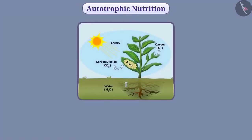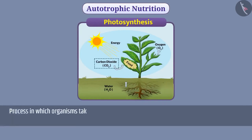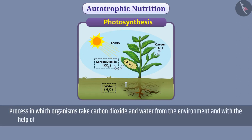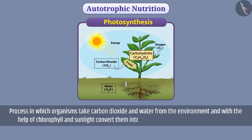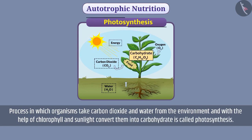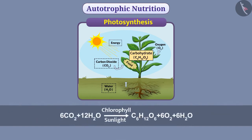Let us understand autotrophic nutrition in detail. In autotrophic nutrition, organisms make their own food through the process of photosynthesis. The process in which organisms take carbon dioxide and water from the environment, and with the help of chlorophyll and sunlight convert them into carbohydrates, is called photosynthesis. They get their energy requirement from the carbohydrates. The process of photosynthesis is represented in this form. For photosynthesis, carbon dioxide, water, chlorophyll, and sunlight are necessary.